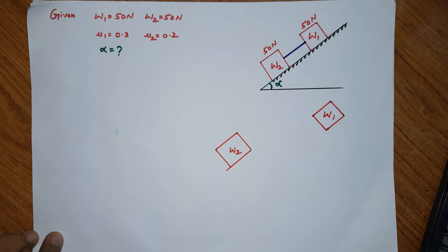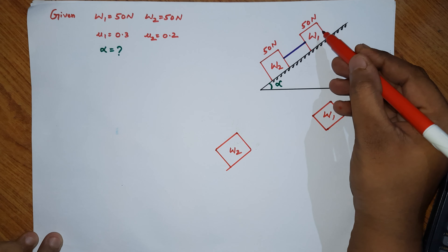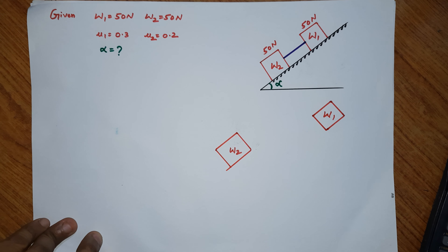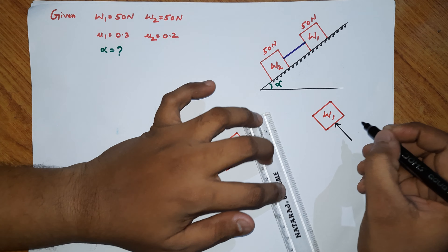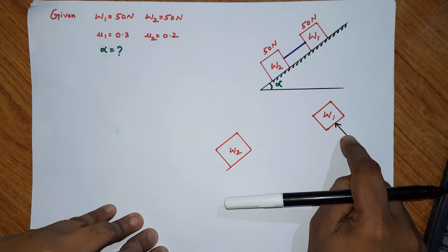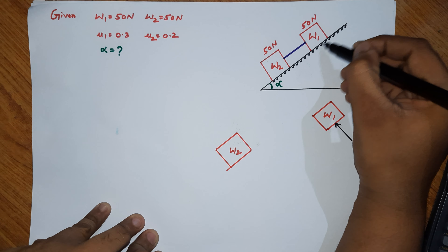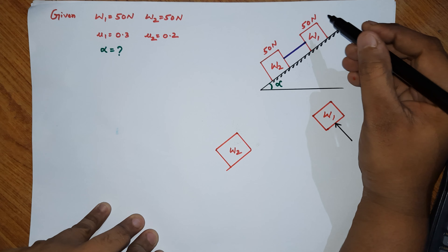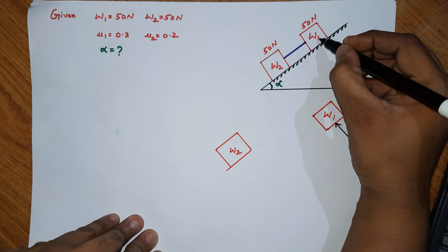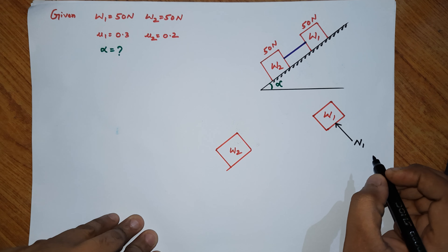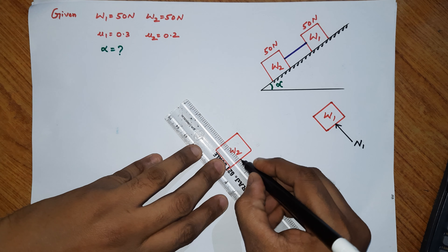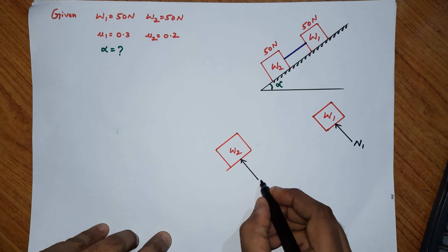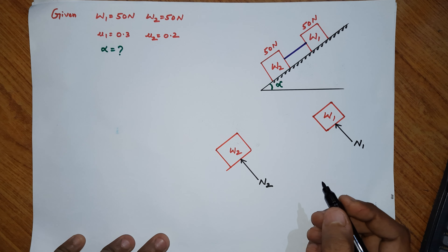Now draw the two blocks. W1 block is in contact with the inclined plane, so the inclined plane exerts a reaction on W1 block — this is the normal reaction N1. Similarly, W2 block is in contact with the inclined surface, so we get normal reaction N2 from that surface.